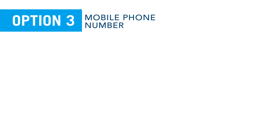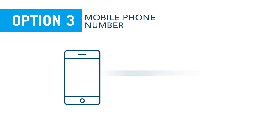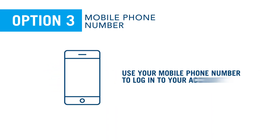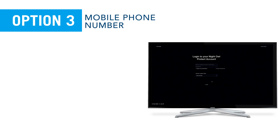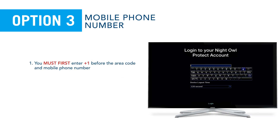Option three: mobile phone number. Your mobile phone number was verified when you created your Night Owl Protect account. Follow these steps to use your mobile phone number to log into your account. When logging into a recorder, you must type plus one before the area code and mobile phone number.